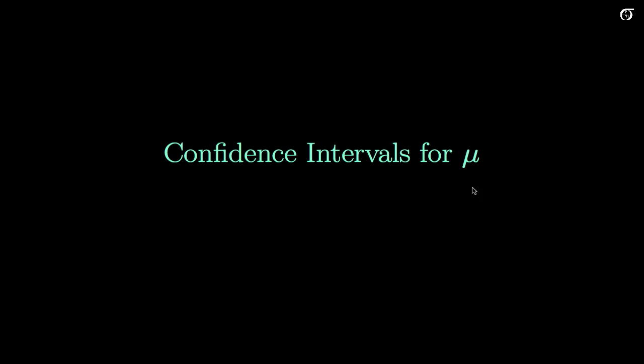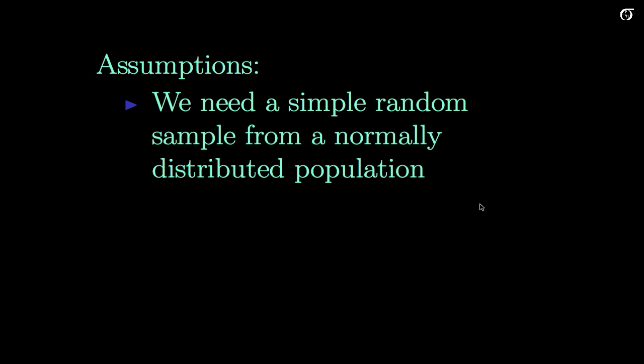Here we're going to continue our discussion about confidence intervals for mu under a slightly different setting from last time. Now we still have this assumption that we have a simple random sample from a normally distributed population, and as per usual that assumption becomes less important as the sample size increases due to the central limit theorem.